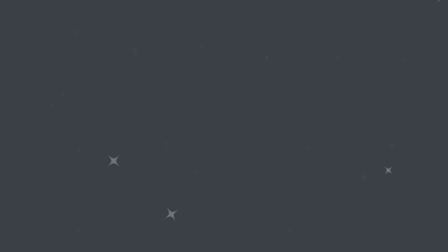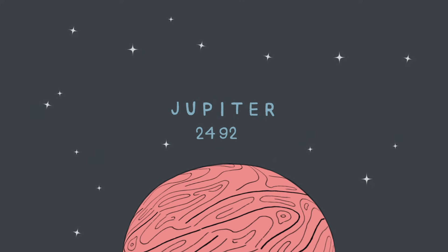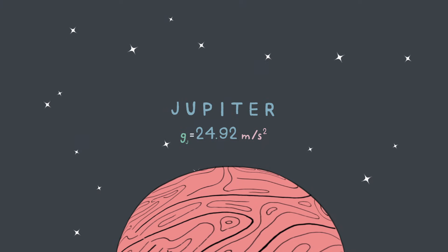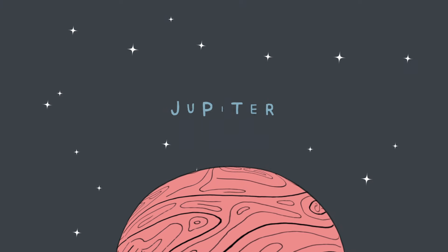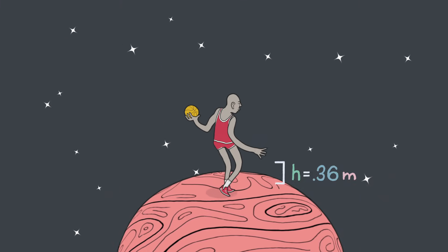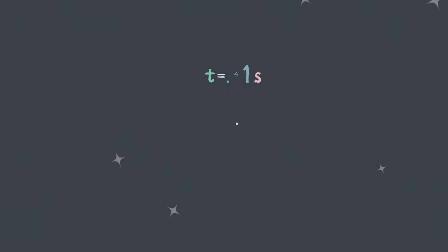The competition on Jupiter, with its gravitational pull of 24.92 meters per second squared, would be much less entertaining. Here, Michael wouldn't even get a half meter off the ground and would remain airborne a mere 0.41 seconds.